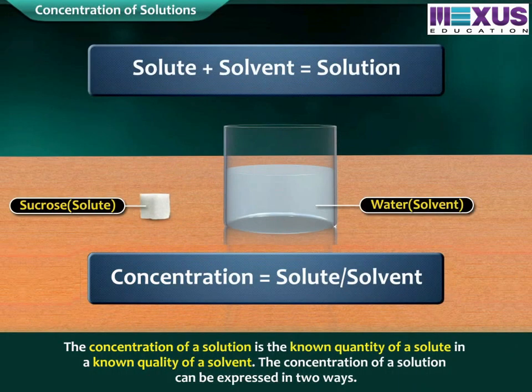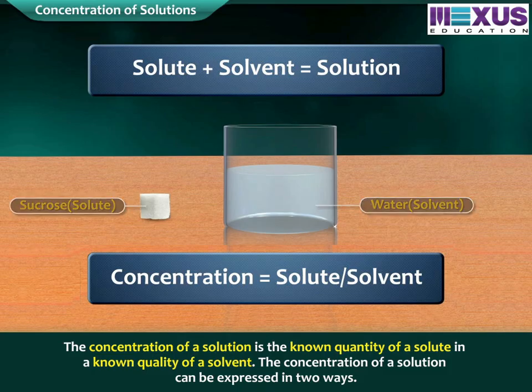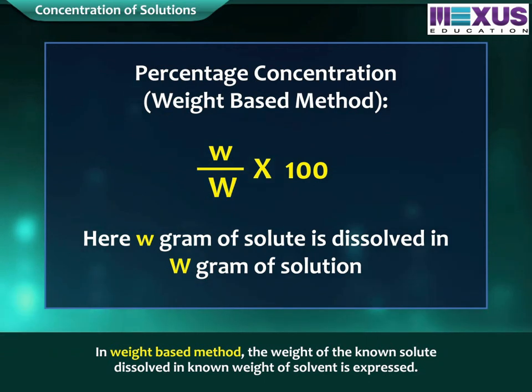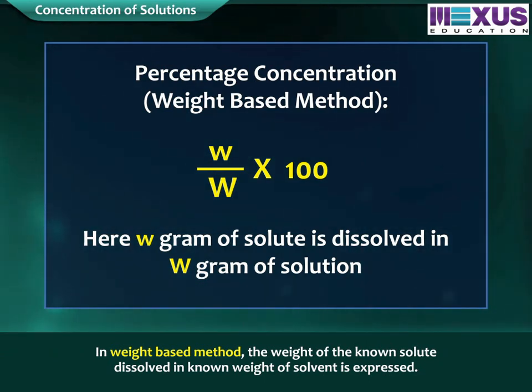The concentration of a solution is the known quantity of a solute in a known quantity of a solvent. The concentration of a solution can be expressed in two ways. In the weight-based method, the weight of the known solute dissolved in a known weight of solvent is expressed.